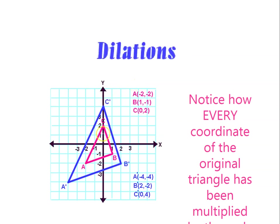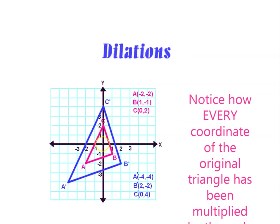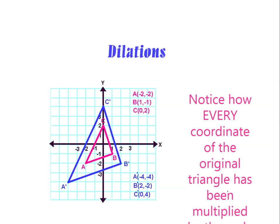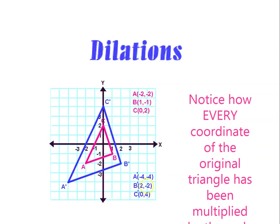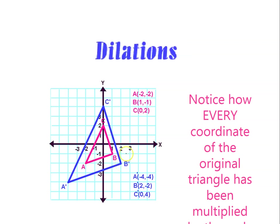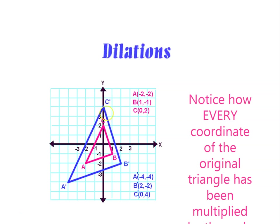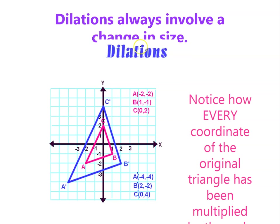If you are going to extend the equation, for example, from the original, notice how every coordinate of the original triangle has been multiplied. If you multiply everything by two, then two times negative two gives negative four, two times one gives two, two times negative one gives negative two, and zero and four. That is the point where you can find the new coordinates. To solve dilation, just multiply by how much it will extend or zoom up and increase in size. Dilation involves a change in size.